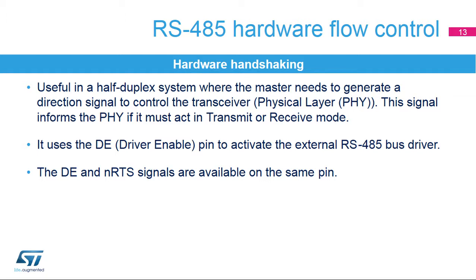For serial half-duplex communication protocols like RS-485, the master needs to generate a direction signal to control the transceiver or physical layer. This signal informs the physical layer if it must act in send (TX) or receive (RX) mode. In RS-485 mode, a control line is used. The driver-enabled pin is used to activate the external transceiver control. DE shares the pin with N-RTS.